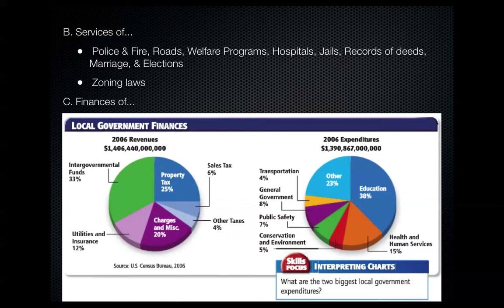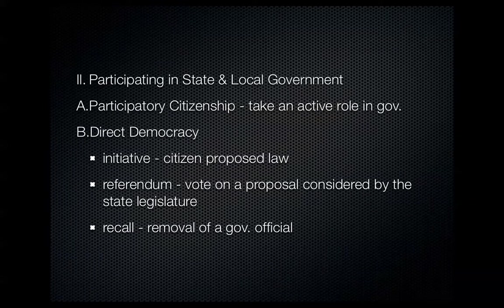On the right side of this chart you can see expenditures. The biggest expenditure is education, followed by others, and health and human services. That's how a local government makes and spends its money. Citizens can also participate in state and local government — everyone should take an active role and be a participatory citizen.